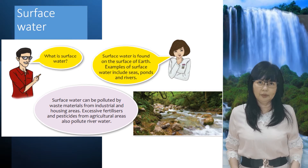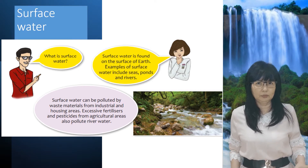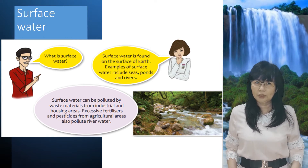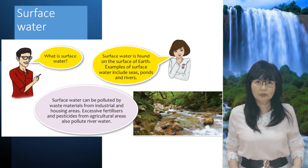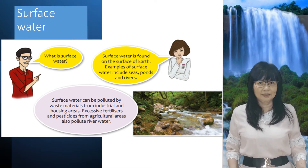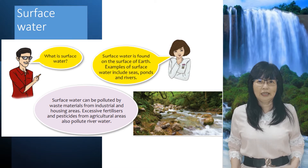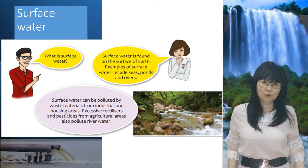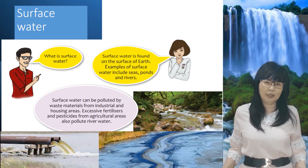Surface water can be polluted by waste materials from industrial and housing areas. Excessive fertilizers and pesticides from agricultural areas also pollute river water.